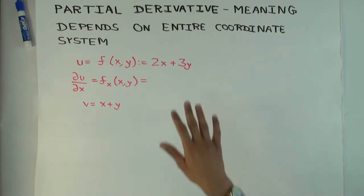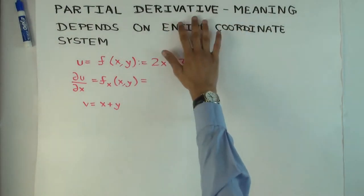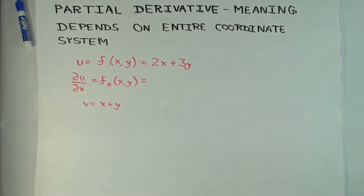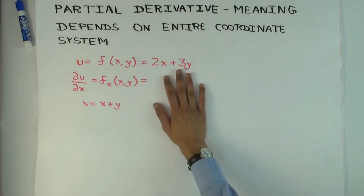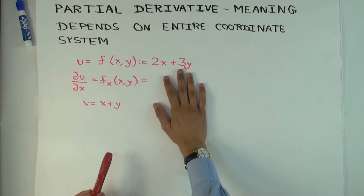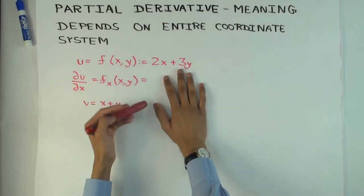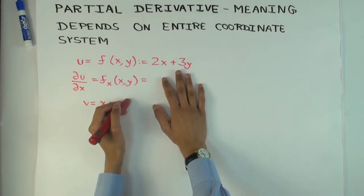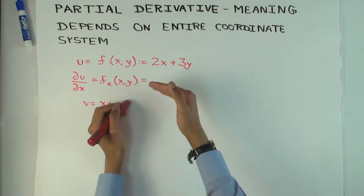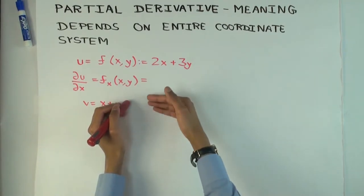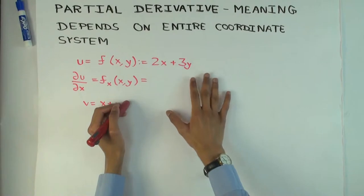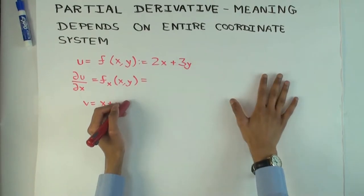So in this talk, I'm going to explain how the meaning of the partial derivative depends on the entire coordinate system. What that essentially means is that the meaning of the partial derivative with respect to a particular variable depends not just on the fact that you are changing or differentiating with respect to that variable, but also on the fact that you are keeping certain other variables constant.